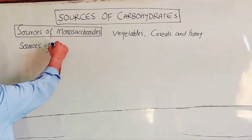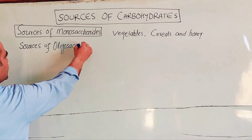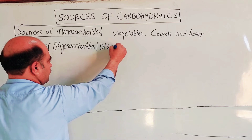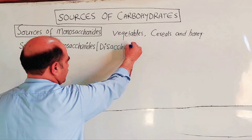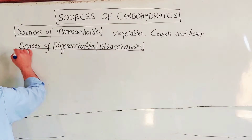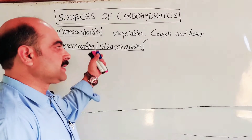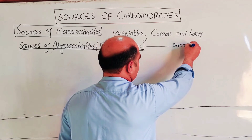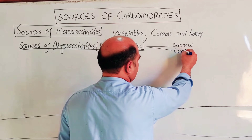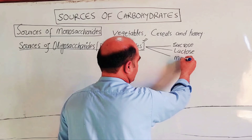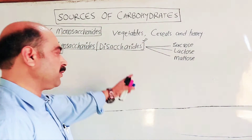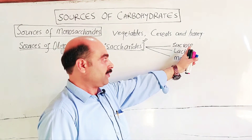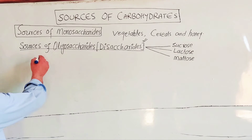The next category is sources of oligosaccharides, especially disaccharides. Oligosaccharides are most importantly represented by disaccharides. The three key disaccharides are sucrose, lactose, and maltose, as discussed in previous videos. Sucrose, also known as common sugar or cane sugar, is among the most important sources of disaccharides.